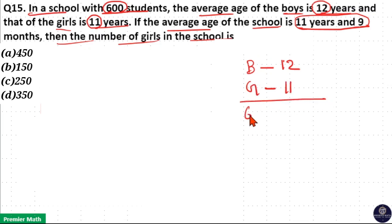And total number of boys and girls is 600. The average of these 600 students is 11 years and 9 months. Now you can see 11 is common.